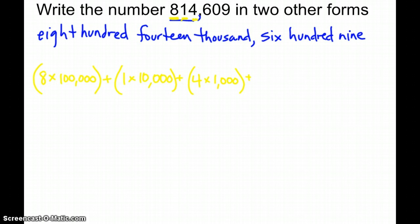And then I'm going to add that to a 6 in the 100s, so I do 6 times 100. Now I have a 0 here in the 10s, so I don't have to do anything for the 10s. I don't have to add 0 because 0 isn't anything. So I'm going to skip right to the 1s. I have a 9 in the 1s place, so I do 9 times 1.